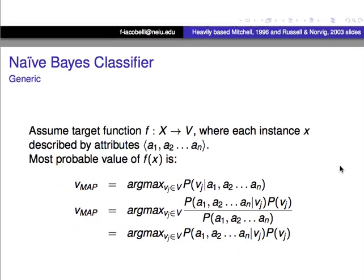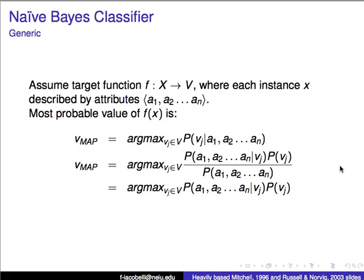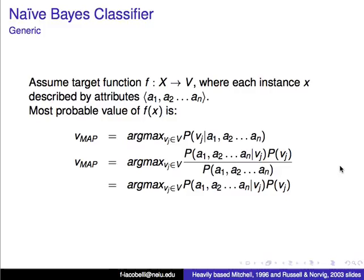Let's talk about the Naive Bayes classifier as a generic problem. Assume there's a target function that goes from a set of examples x to some value v, where each instance, little x, is described by attributes a1, a2, up until a_n.